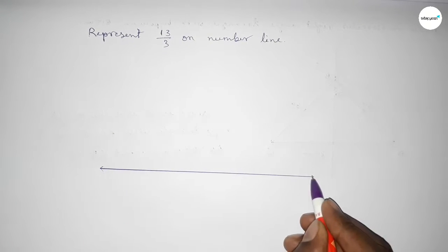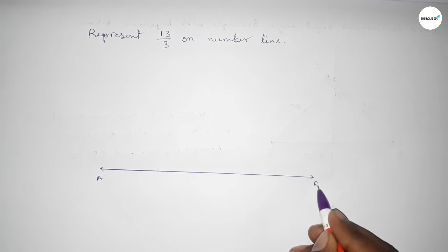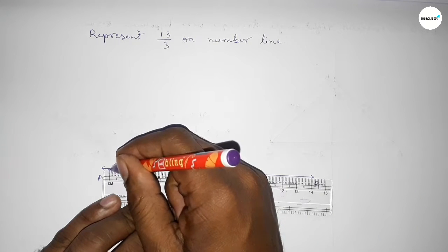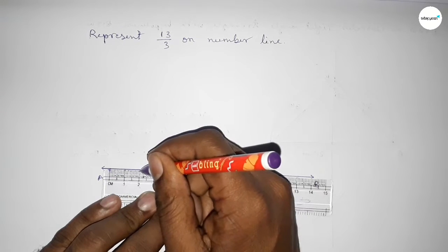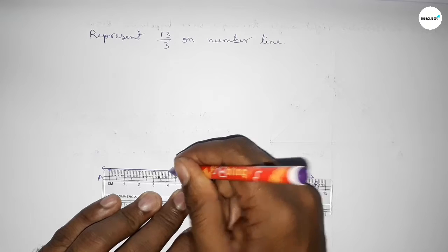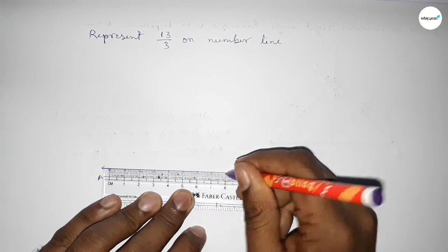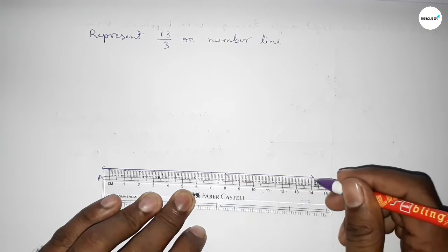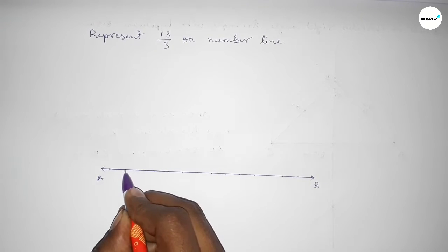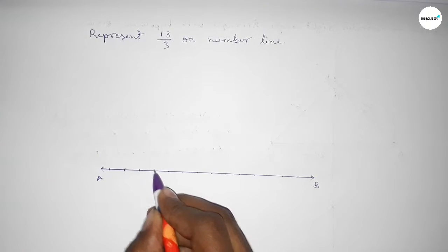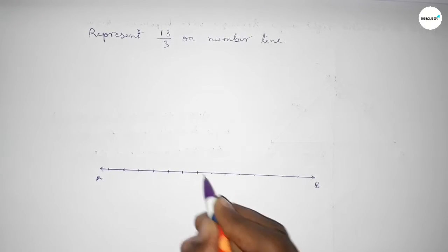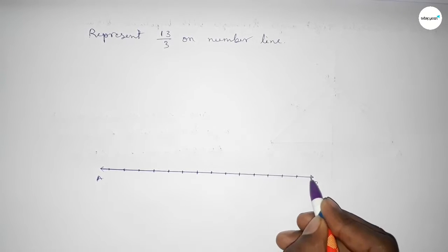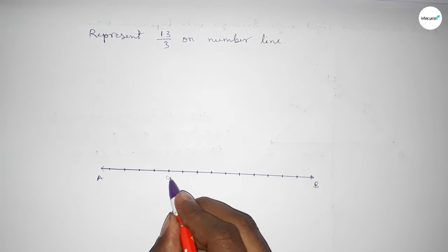Drawing a line and taking arrow marks on both sides, and taking here point A and point B. Now we have to mark the numbers on the line by using a scale. We mark the numbers on the line with deep color to understand perfectly.